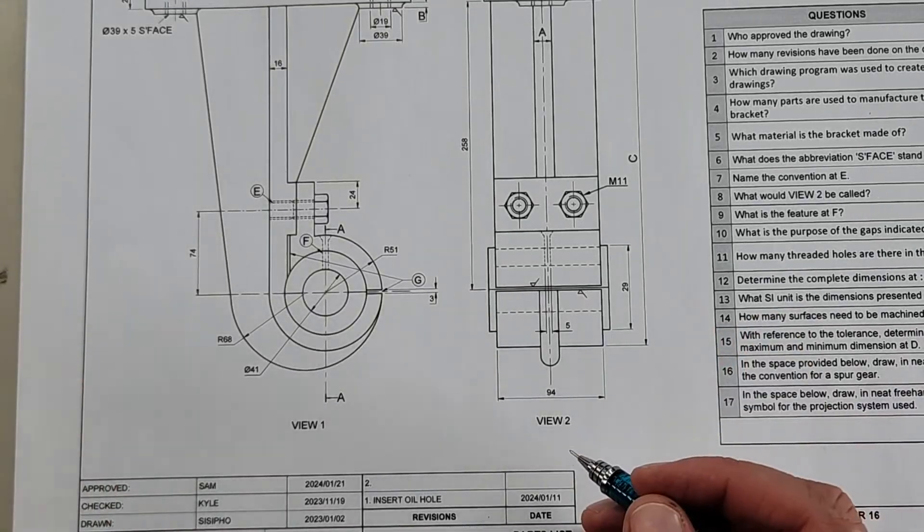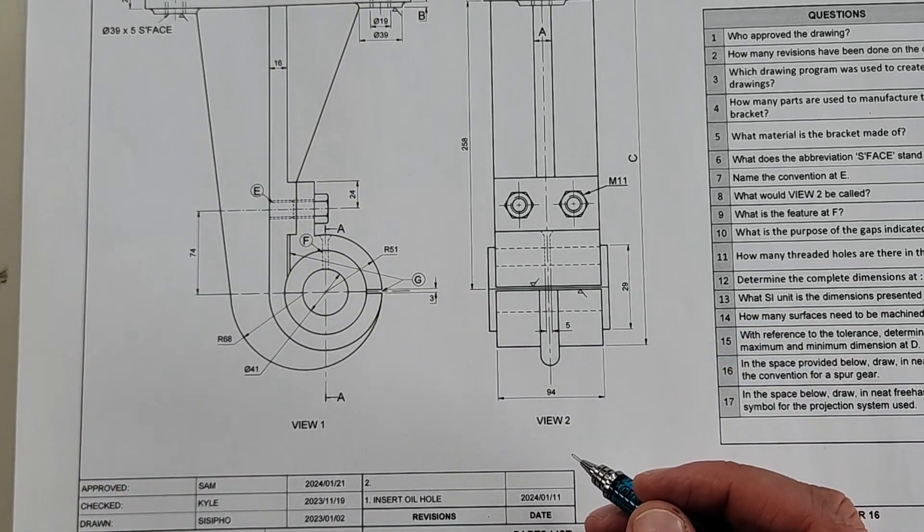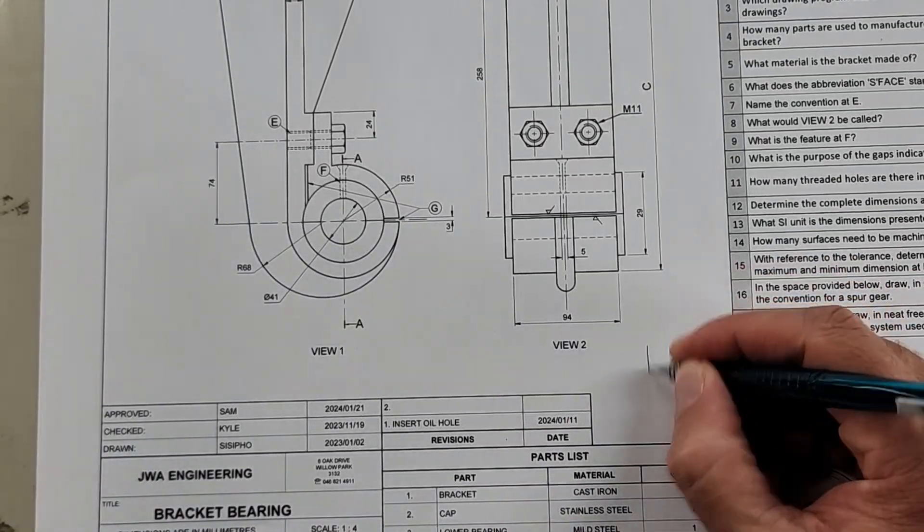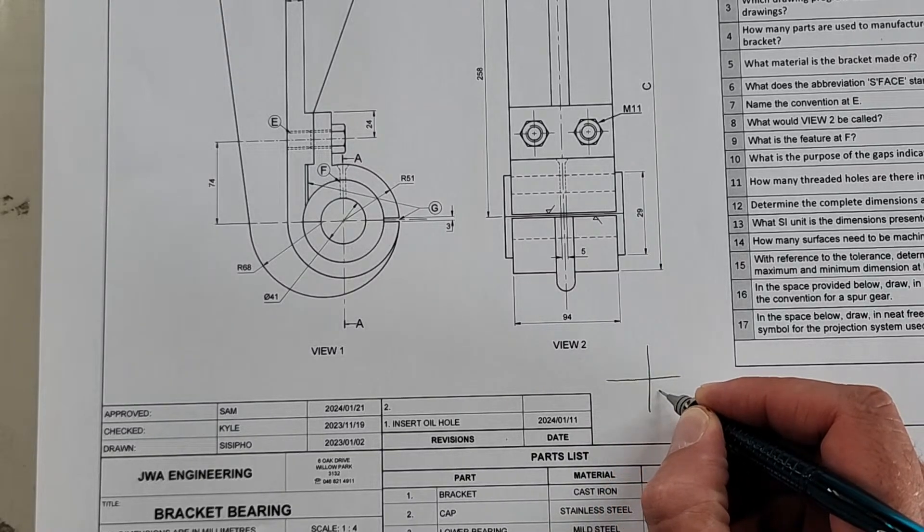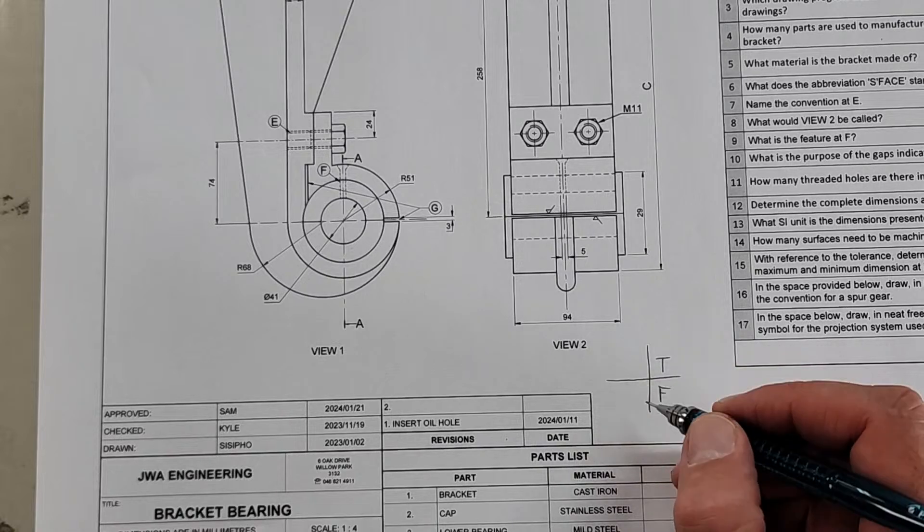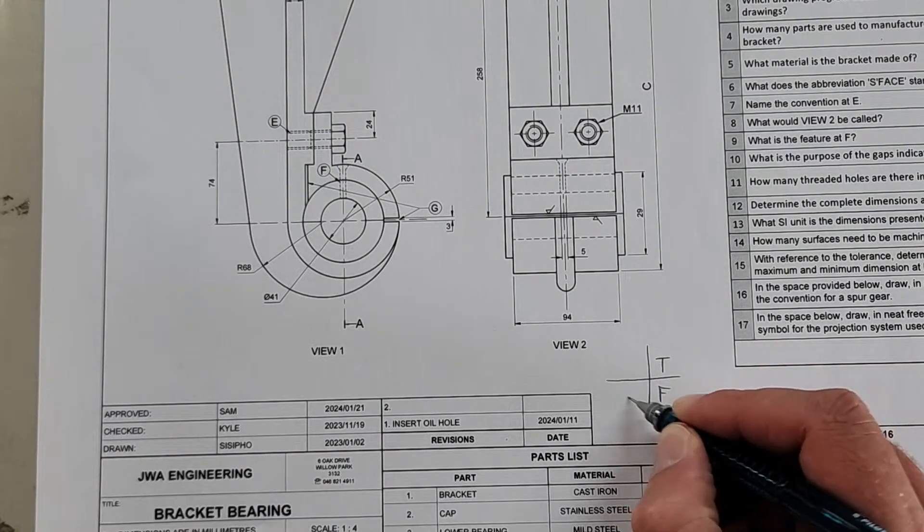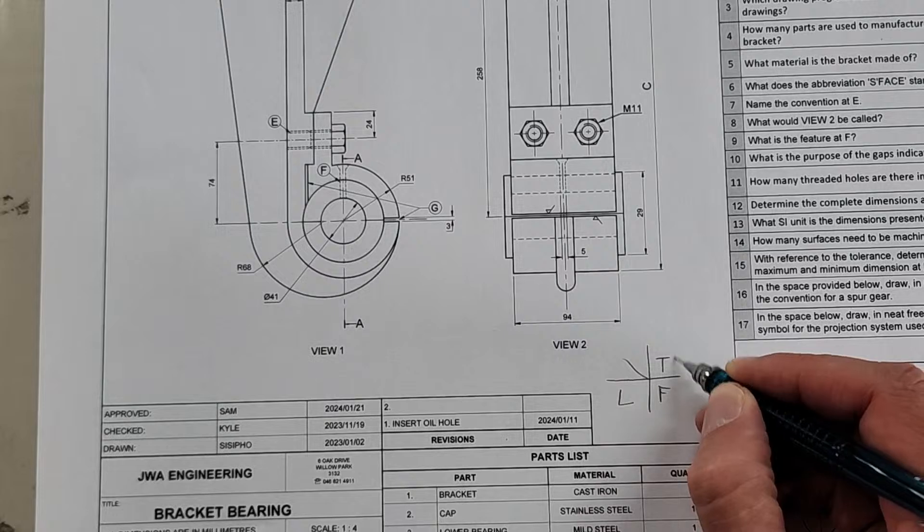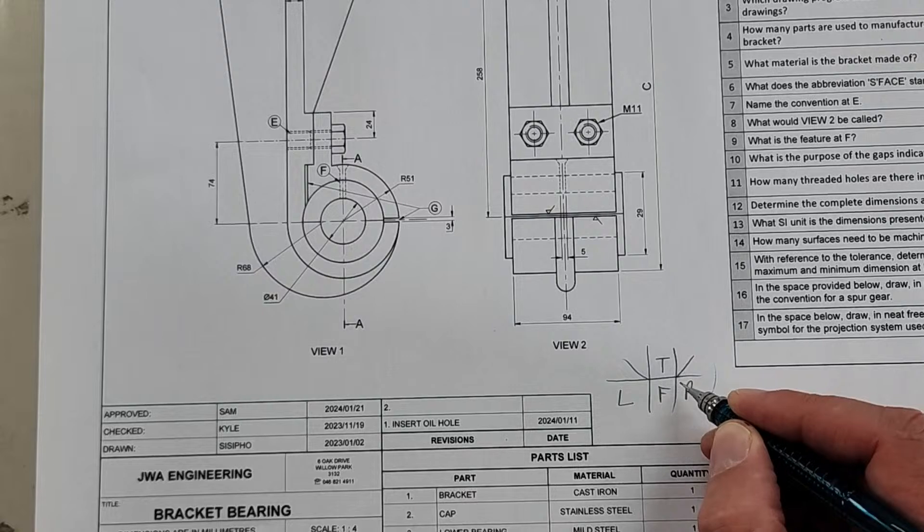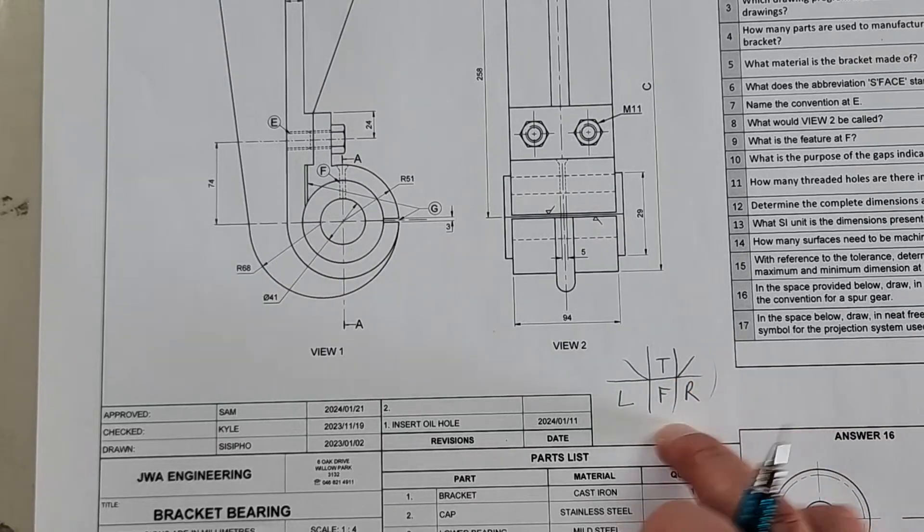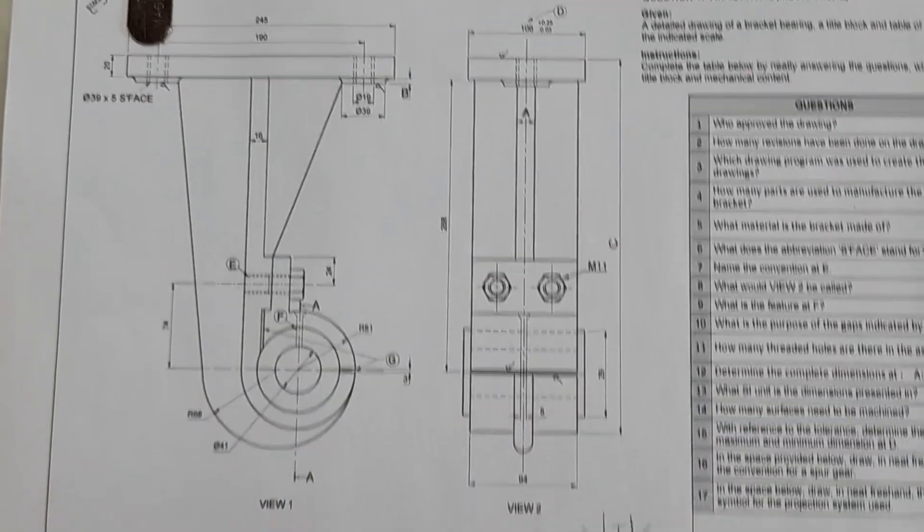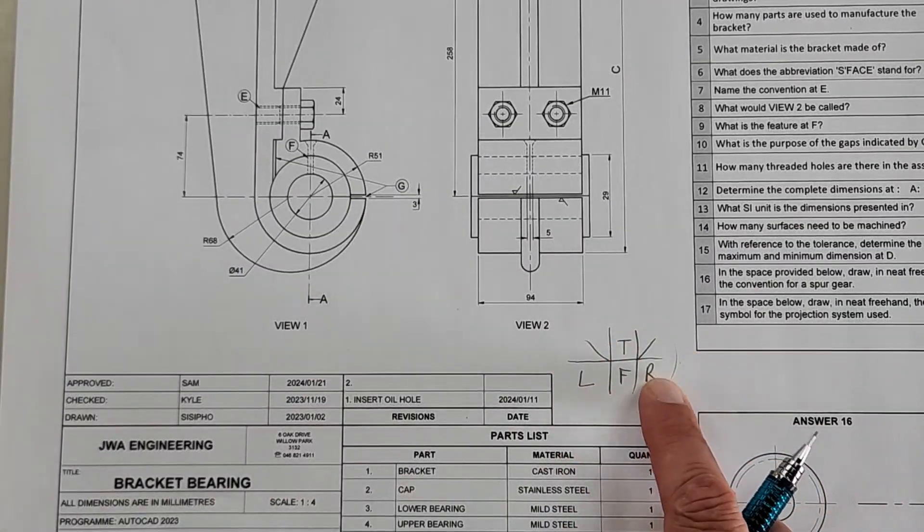First things first, understand and remember that all questions in this paper will be third angle orthographic projection. So if you're looking at your projection, you're going to have your front view at the bottom, you'll have your top view here, and your actual left view will be on this side. Remember this because here we are given two views and we are going to have to figure out which views they are.